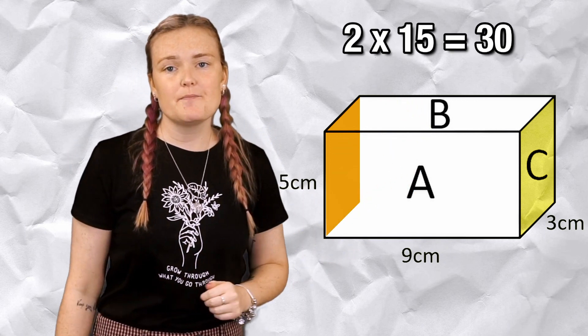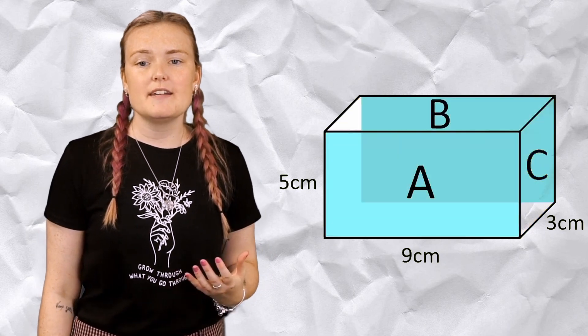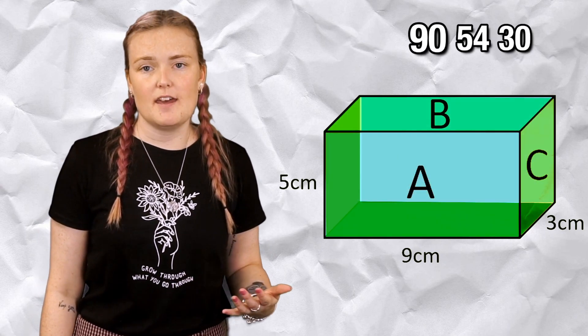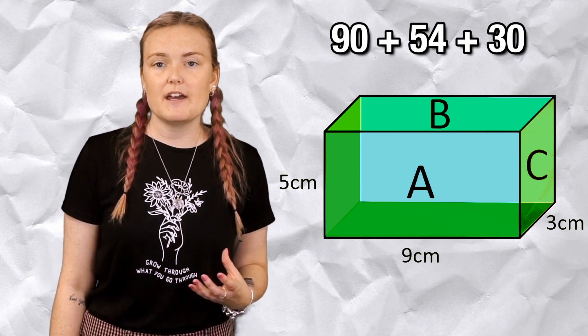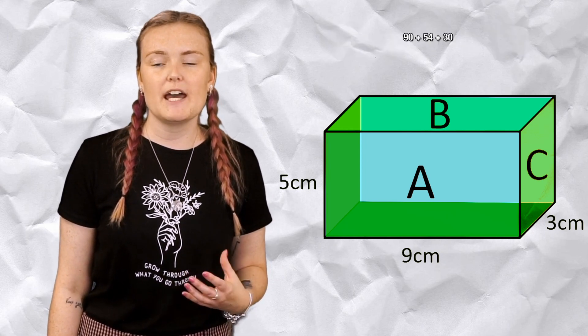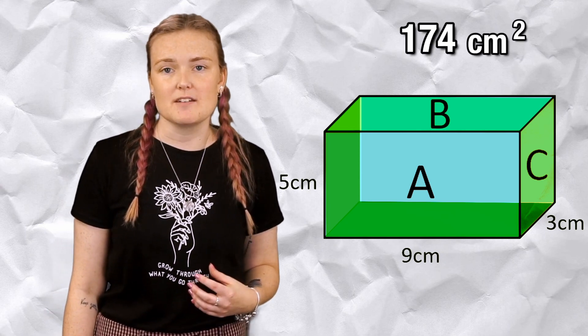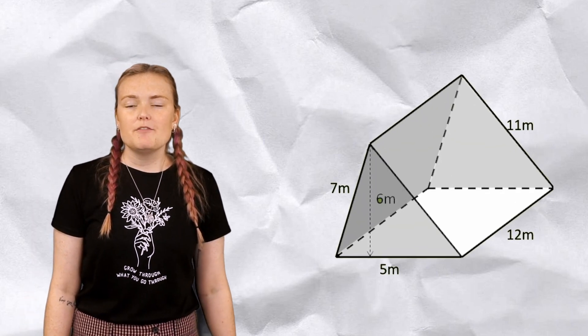So I've now got 90, 54, and 30. I just need to add those all together and that's every single face taken into account. So when I add those I get 174 centimeters squared.